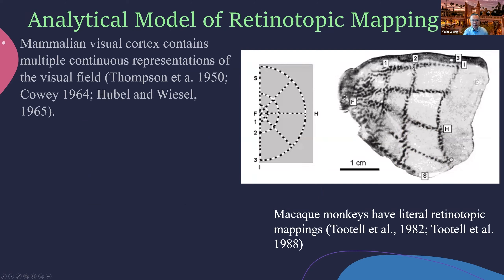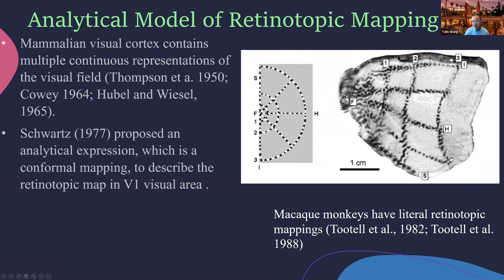We have better understanding of the mammalian — for example, monkey — visual cortex by sacrificing the monkey and inserting electrodes in the visual area. Our understanding is that there is a literal retinotopic mapping: on the left is the visual field and on the right is the flattened monkey visual area. You can see the fovea area and regions V1, V2, V3 are topologically connected and actually conformal, meaning local angles are preserved and local areas have strong similarity.